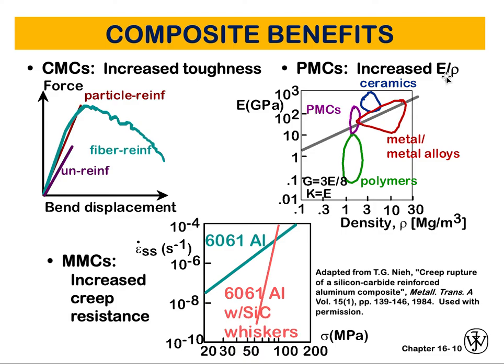The toughness increases because of particle and fiber reinforcement as opposed to just having an unreinforced material. If you are looking for increased elastic modulus relative to density, you can look at polymer-metal-ceramic composites. This graph shows where polymer-metal-ceramic composites fall as a material compared to metal alloys, polymers, and ceramics. So if you have an application that requires an elastic modulus in a certain range with respect to density, you can achieve lower density while still maintaining high elastic modulus.